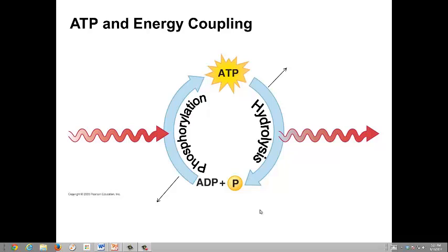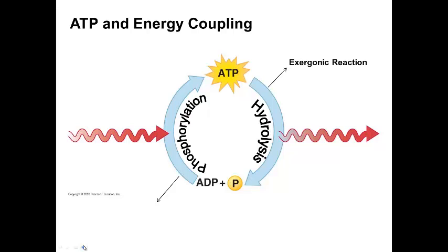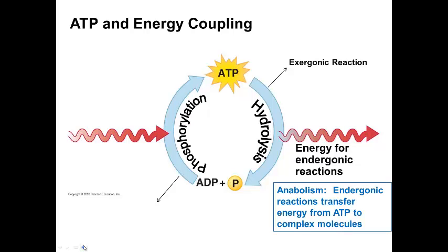Alright, let's see if we can put this all together. ATP is a renewable source of energy for the cell and supports energy coupling in the cell. When ATP is hydrolyzed, that is an exergonic reaction. That energy that's released when ATP goes to ADP is used to drive endergonic reactions in the cell. Those reactions that are considered anabolism. Endergonic reactions are the ones that transfer energy from ATP to form more complex molecules in the cell.